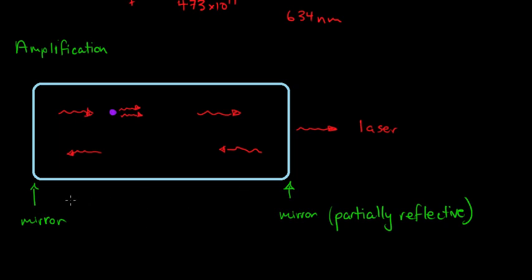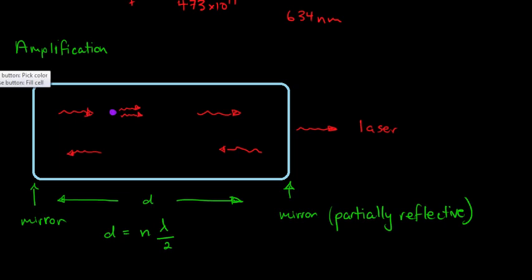The mirrors are set a certain distance apart — this is very important. This distance d actually corresponds to d equals some integer n multiplied by one-half wavelength. What happens is as these photons bounce backwards and forwards, they actually constructively interfere with each other, because these mirrors are this distance d apart and that d corresponds to some integer multiple of a wavelength divided by 2 — we have constructive interference for these photons.